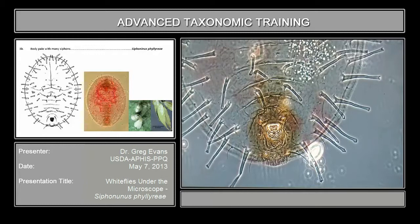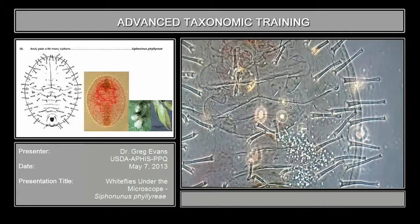Here's the transverse suture again. These are the A1cd — this is the first abdominal segment, so we call these the A1cd.